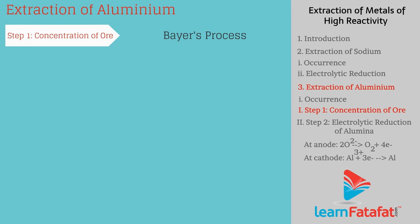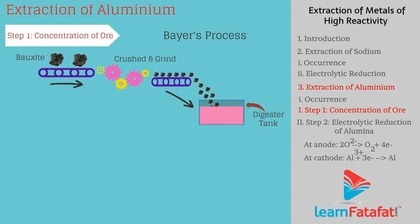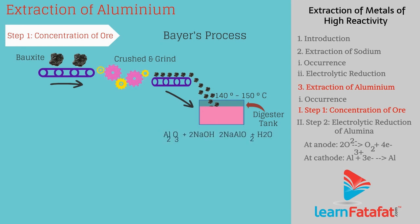Bayer's process: Ore containing impurities is crushed and then fed to a digester tank. In the digester, it is treated with hot concentrated sodium hydroxide solution under high pressure at 140°C to 150°C for 2 to 8 hours. Aluminium oxide reacts with sodium hydroxide to form sodium aluminate: Al₂O₃ + 2NaOH → 2NaAlO₂ + H₂O.